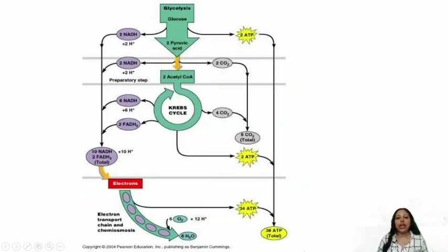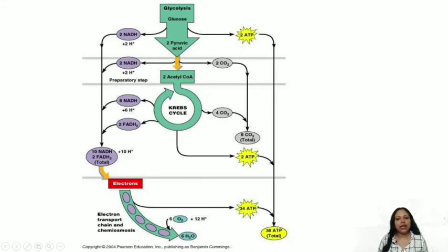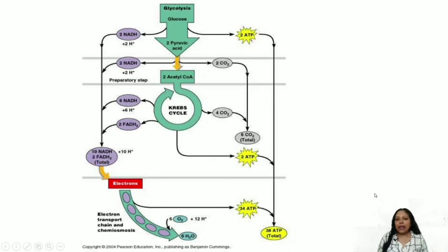Finally, regarding net ATP generation: starting from pyruvic acid through oxidative phosphorylation and the electron transport chain gives 30 ATP. Adding glycolysis: 2 direct ATP plus 2 NADHs (each NADH = 3 ATP) gives 6 more, totalling 8 additional ATP — for a grand total. Note that these calculations use 3 equivalents for NADH and 2 for FADH₂; many textbooks use approximately 2.5 for NADH and 1.5 for FADH₂.